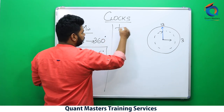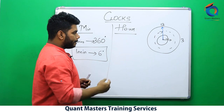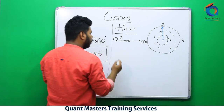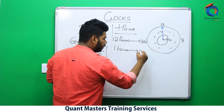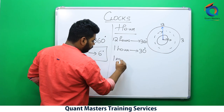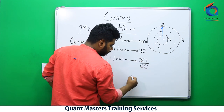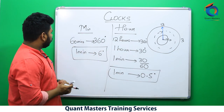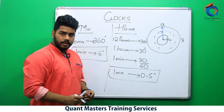Now if I talk about the hour hand — the hour hand takes 12 hours to cover 360 degrees. In 12 hours if it covers 360 degrees, in one hour it covers 360 by 12, that is 30 degrees. In one hour if it covers 30 degrees, in one minute it covers 30 divided by 60, which is 0.5 degrees. So: minute hand in one minute covers 6 degrees; hour hand in one minute covers 0.5 degrees.